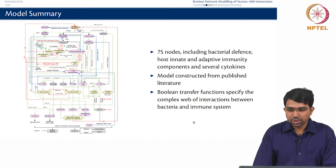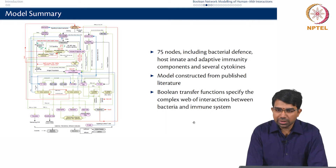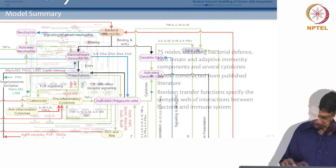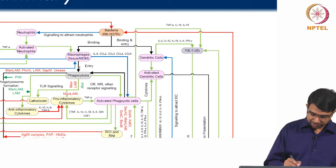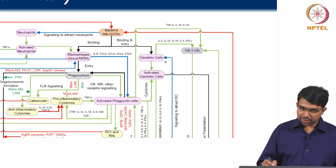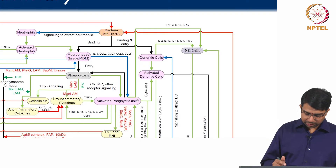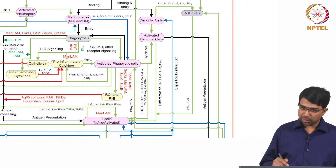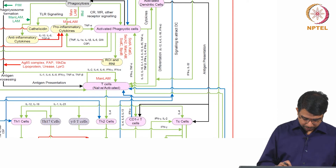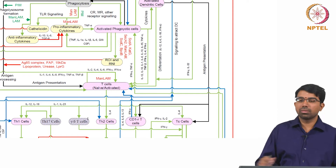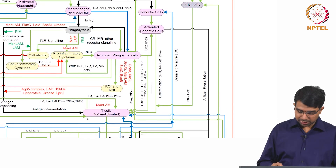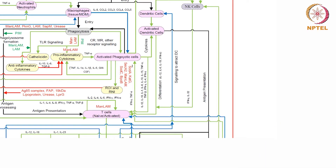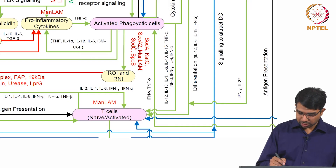This is how complex the system looks — a whole lot of different cells, cell states, species, and molecules. Zooming into a part of it: the bacterium interacts with macrophages, neutrophils, activated neutrophils, dendritic cells, activated dendritic cells, activated phagocytic cells, pro-inflammatory cytokines, reactive oxygen and nitrogen intermediates, T cells that could be naive or activated, TH1 cells, TH17 cells, gamma-delta T cells — the whole battery of immune system components. There are also bacterial proteins such as SORD-A, SEC-A2, SORD-C, BP-OB, and MAN-LAM.